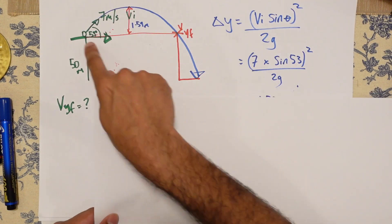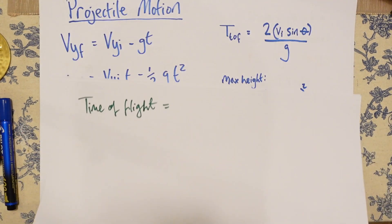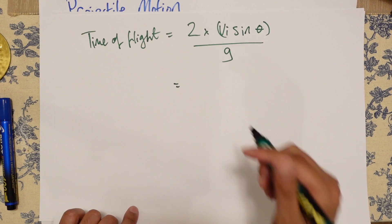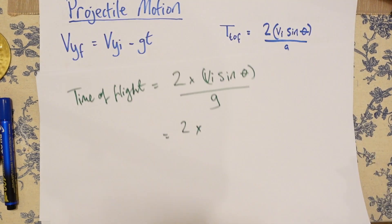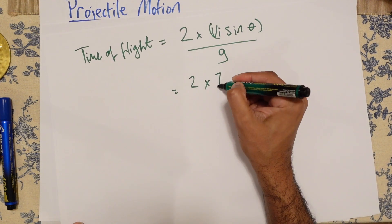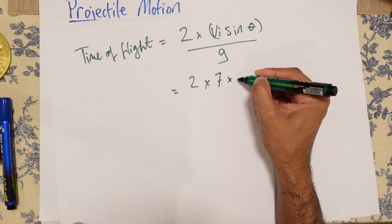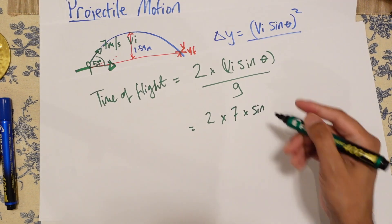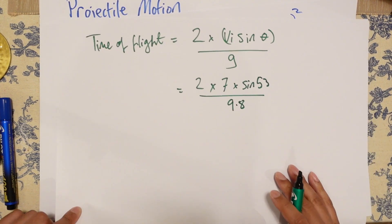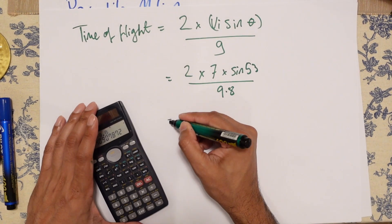In fact, the first thing we're going to do, we're going to work out the time of flight for this, because that's fairly easy. Two VI sine theta divided by G. So let's get our VI sine theta. So VI 7 meters per second times sine 53 divided by 9.8, which is 1.14 seconds.